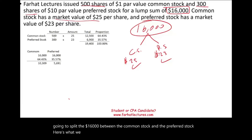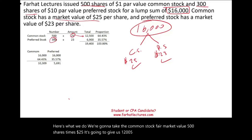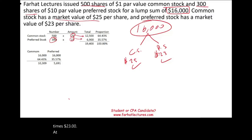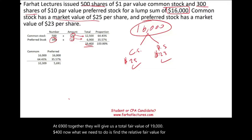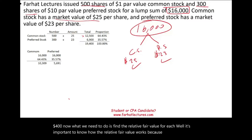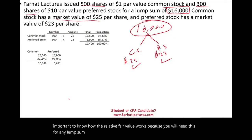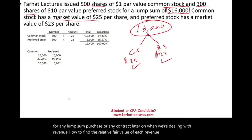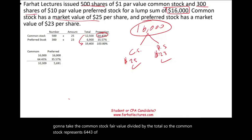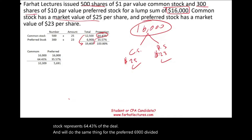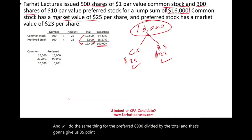Let's see how we split the $16,000 between the common stock and the preferred stock. We take the common stock fair market value: 500 shares times $25, which gives us $12,500. The preferred stock: 300 shares times $23, that's $6,900. Together, they give us a total fair value of $19,400. Now we find the relative fair value for each. The common stock represents 64.43% of the deal ($12,500 divided by $19,400), and the preferred represents 35.57% ($6,900 divided by $19,400). They add up to 100%.